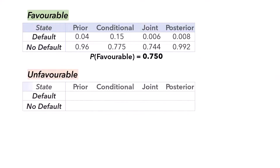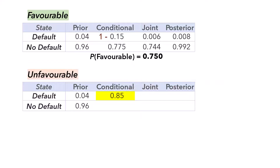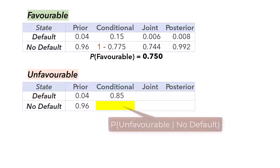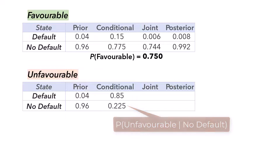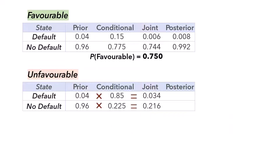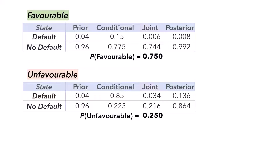For unfavorable recommendation, the prior probabilities do not change. The probability of unfavorable given default will be 1 minus 0.15, which is 0.85. And the probability of unfavorable given no default is 1 minus 0.775, which gives 0.225. We multiply the prior and conditional to obtain the joint. We add the joints to obtain the marginal probability of unfavorable. And dividing each joint by the marginal gives the posterior probabilities given unfavorable recommendation.